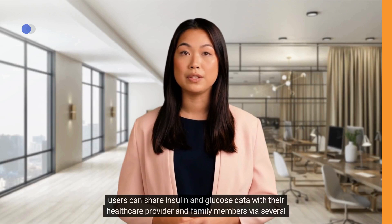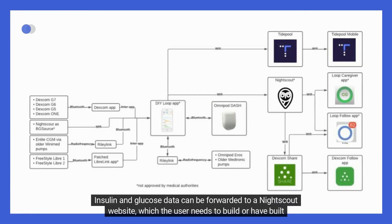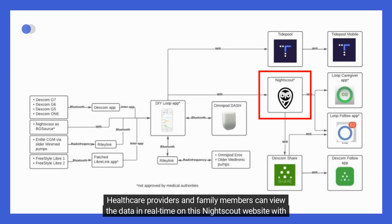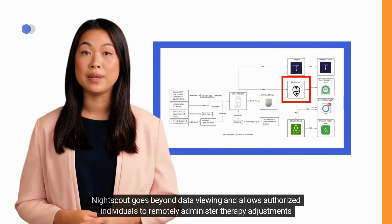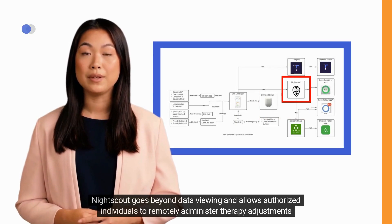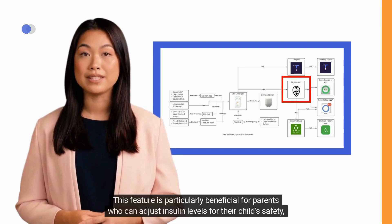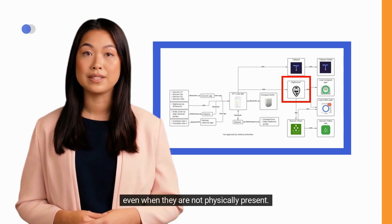With DIY Loop, users can share insulin and glucose data with their healthcare provider and family members via several apps and platforms. The most used platform is NightScout. Insulin and glucose data can be forwarded to a NightScout website, which the user needs to build or have built themselves. Healthcare providers and family members can view the data in real-time with a personal token. NightScout also allows authorized individuals to remotely administer therapy adjustments such as insulin boluses, enter carbohydrate information, or apply overrides — particularly beneficial for parents managing a child's insulin remotely.